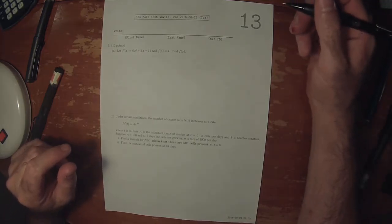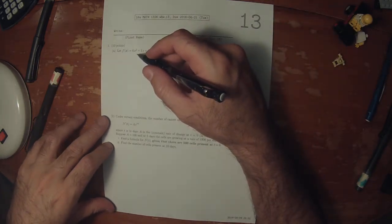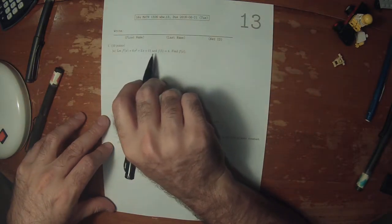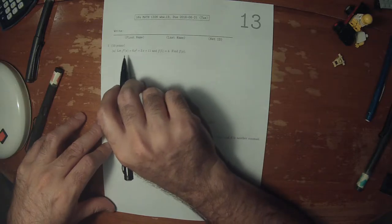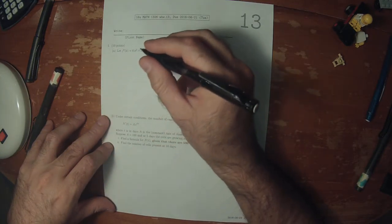This is the solution to written homework 13. We're given the derivative of a function and the evaluation of a function at a particular point. This kind of exercise is called an initial value problem.